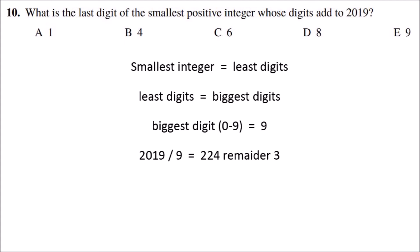Now, 2019 doesn't divide by 9, which means one of the digits would have to be another number. However, that other number doesn't matter because it has to be smaller than 9.